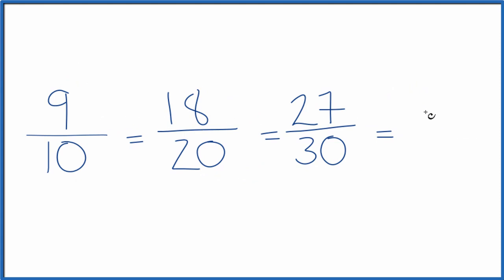How about 4? 9 times 4 is 36. 10 times 4 is 40. And that's another equivalent fraction. So you see how that works.